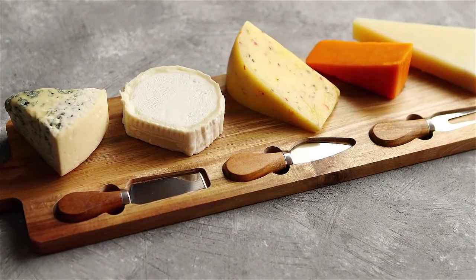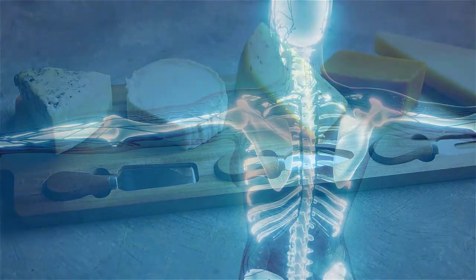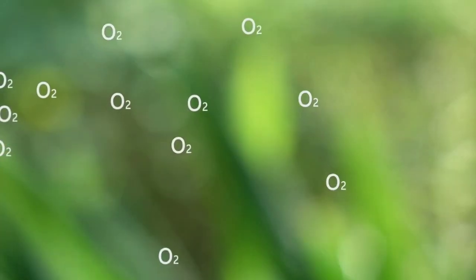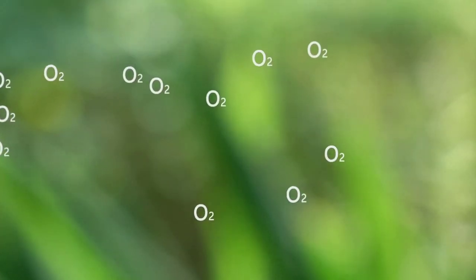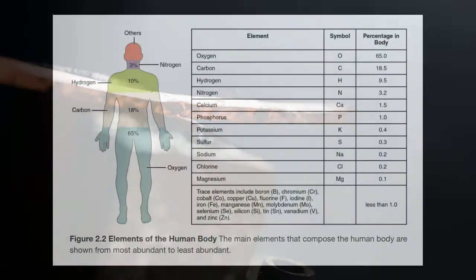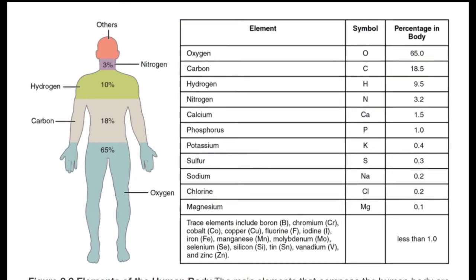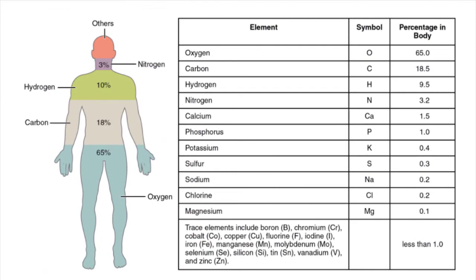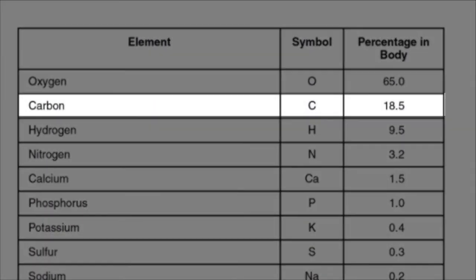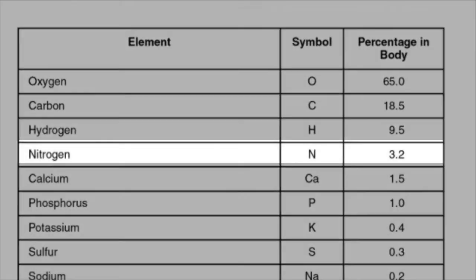The element calcium in cheese, therefore, is the same as the calcium that forms your bones. Some other elements you might be familiar with are oxygen, sodium, and iron. These elements in the human body are shown here, beginning with the most abundant element, oxygen, followed by carbon, then hydrogen, and nitrogen.